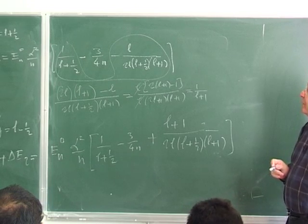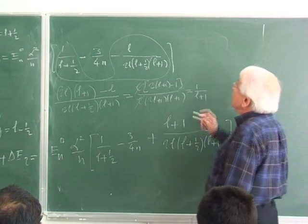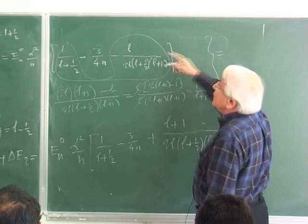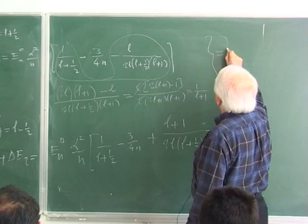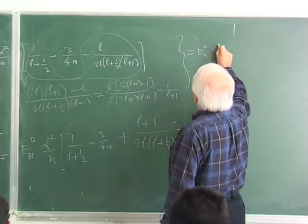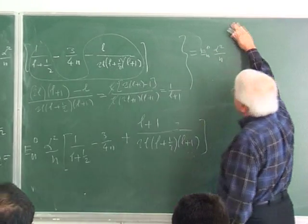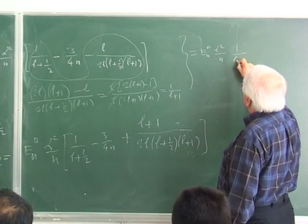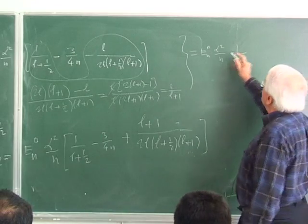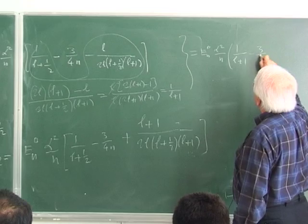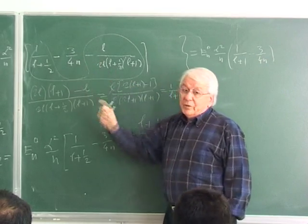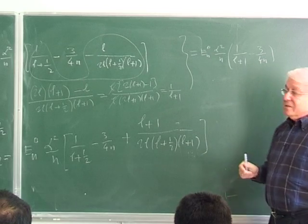You don't expect to get such simple expressions, but you do. So the first result — the J equals L plus 1 half case — is En0 times alpha squared over N times 1 over L plus 1, minus 3 over 4. That's always there, because I have dealt with the angular momentum part and the N part is there.